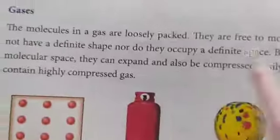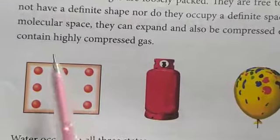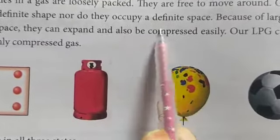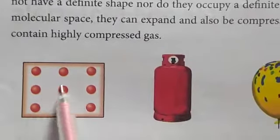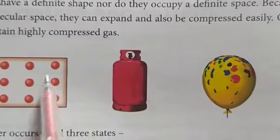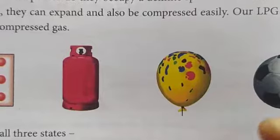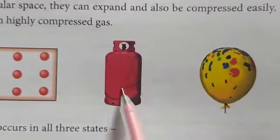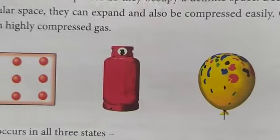In gases, the molecules are loosely packed — they are very far away from each other and can move freely. Gases do not have a definite shape, and they do not occupy a definite space. Because of the large intermolecular spaces, they can expand — meaning they can spread — and can be compressed easily, meaning made closer together. Our LPG cylinders used in kitchens contain highly compressed gas.